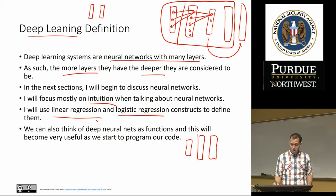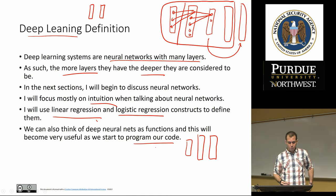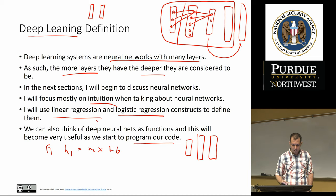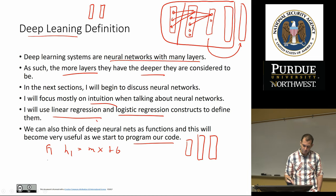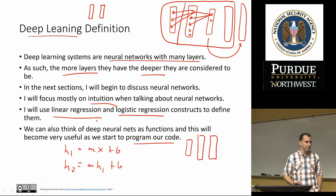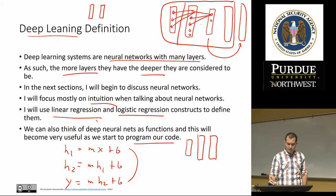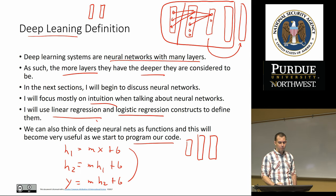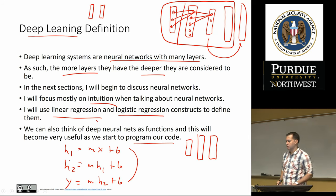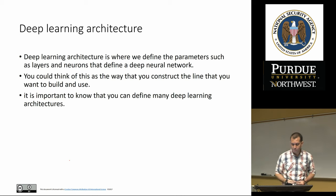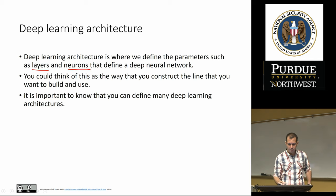If we start adding layers, a logistic regression algorithm now becomes a neural network or a deep neural network. We will use linear regression and logistic regression constructs to define deep neural networks. We can also think of deep neural networks as functions. For example, function one, which is hidden layer one, is actually H1 = mX + b. For the next layer, H2 = W*H1 + b. And the output Y = H2 plus another term. The idea of the hidden layers can actually be written in function format, and we will see that later on.